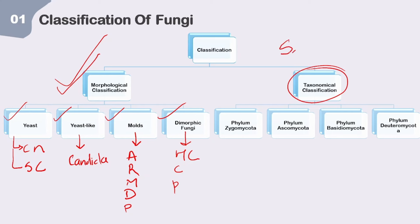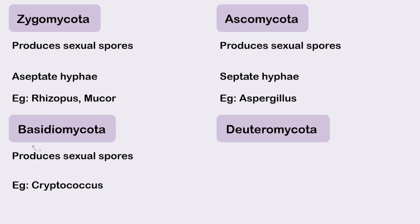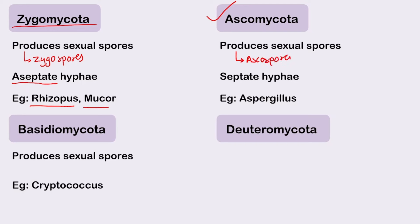Now the taxonomical classification — based on production of sexual spores (mnemonic: ZABD). Zygomycota produces sexual spores called zygospores, has aseptate hyphae, with examples Rhizopus and Mucor. Ascomycota produces ascospores, has septate hyphae — note the difference: Zygomycota is aseptate, Ascomycota is septate — with example Aspergillus.